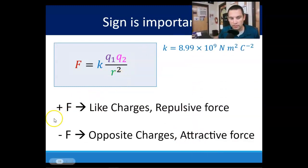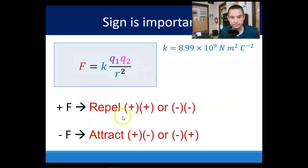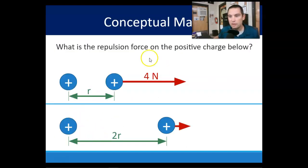Sign is important. A positive force means it is repulsive, which is probably opposite of what you would expect. A negative force means that it is an attractive force. So if q1 and q2 is positive, you're going to get positive. If q1 is positive, q2 is negative, you're going to get a negative force because they attract, right?